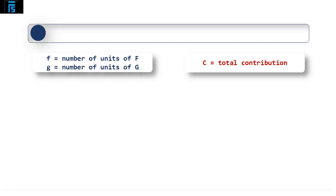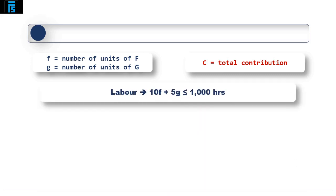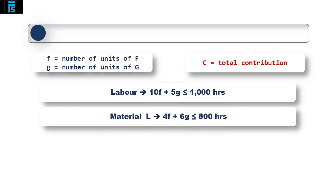With regards to labour hours, we know that each franc takes 10 hours and each greeter takes 5 hours, and that we have a maximum of 1000 hours available. This generates the formula: 10F plus 5G needs to be less than or equal to 1000 hours. Moving on to material L: a franc uses 4kg of material L and a greeter uses 6kg of L, and we have 800kg of this material available for use. The formula to describe this is therefore 4F plus 6G needs to be less than or equal to 800kg.